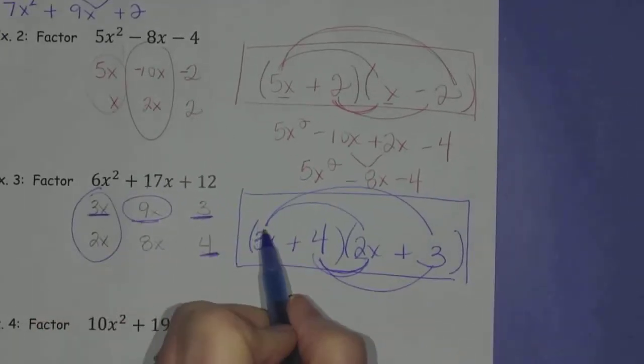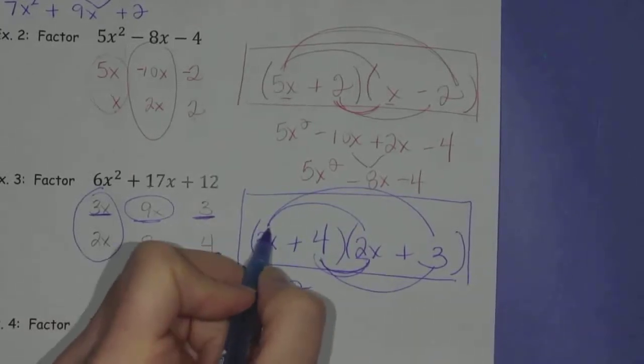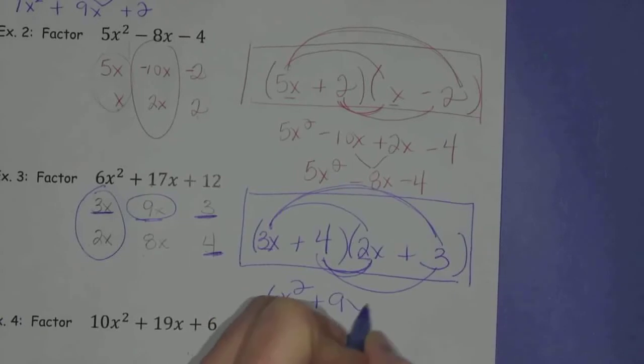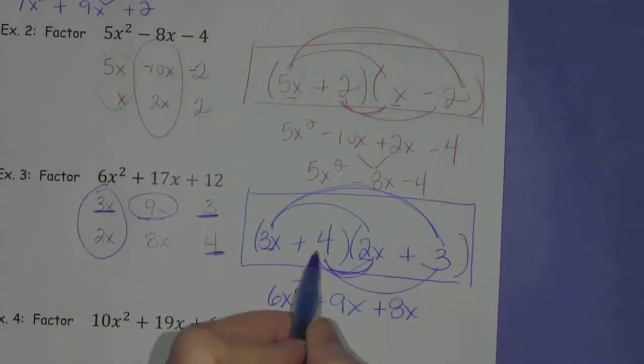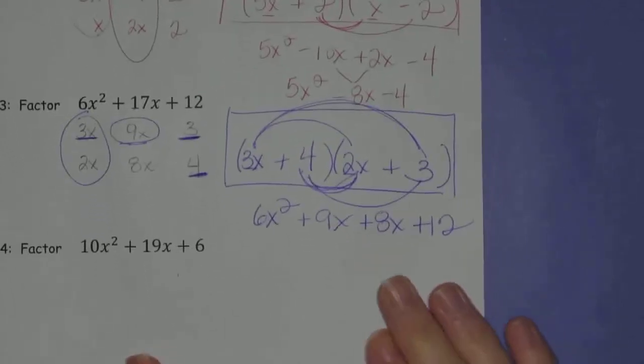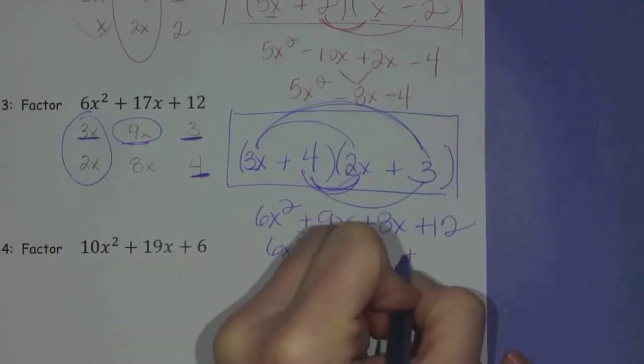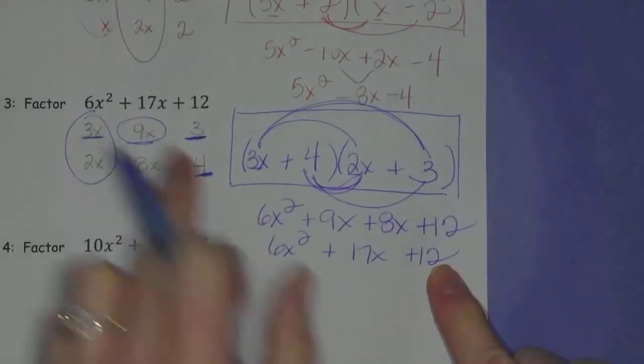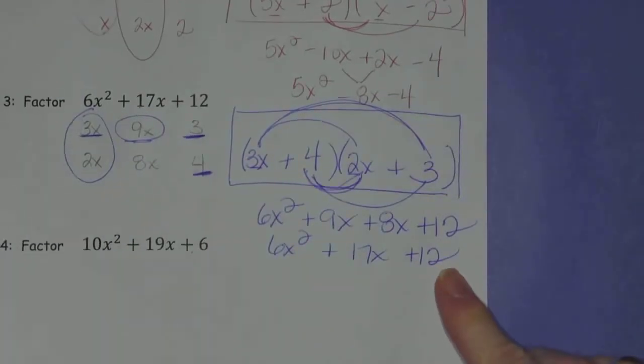My check, here I go. 3x times 2x is 6x squared. 3x times 3, 9x. 4 times 2x, 8x. 4 times 3, 12. Combine my like terms. 6x squared, here it is, 17x and 12. Ta-da! So this is my answer here. 3x plus 4 times 2x plus 3. And we've made it to the last example.